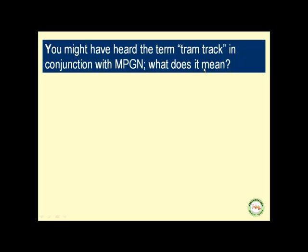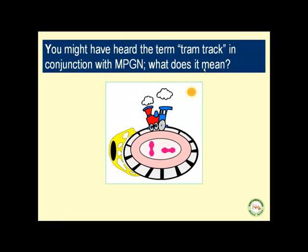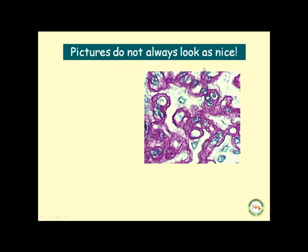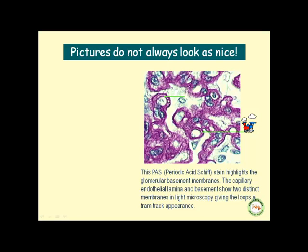You might have heard the term 'tram track' in conjunction with MPGN. What does it really mean? Well, it refers to the basement membrane in MPGN that has a tram track appearance in light microscopy, with the help of special staining techniques. With periodic acid-Schiff staining, the staining method highlights the glomerular basement membrane. The capillary endothelial lamina and the epithelial lamina appear as two distinct membranes in light microscopy, giving the loops a tram track appearance.